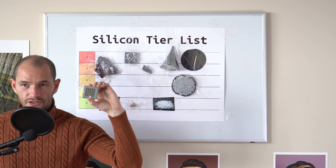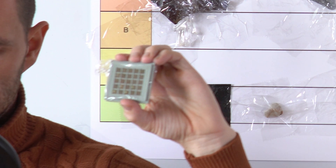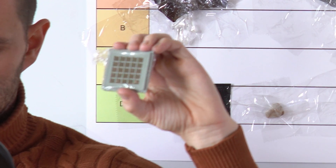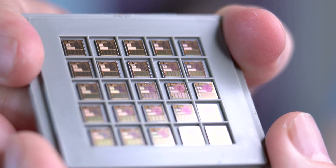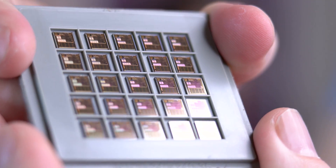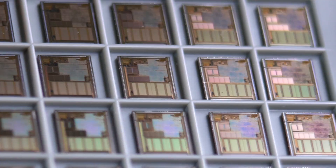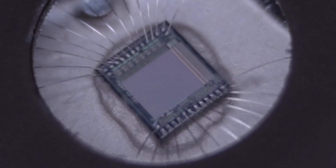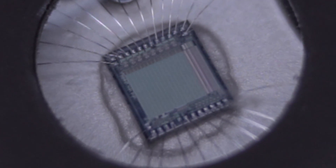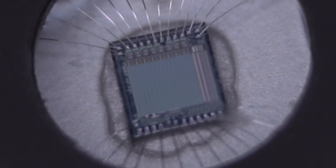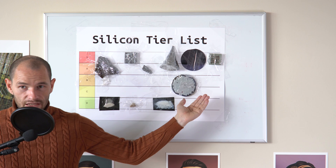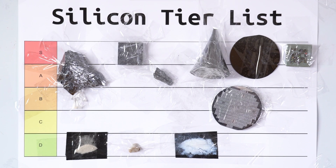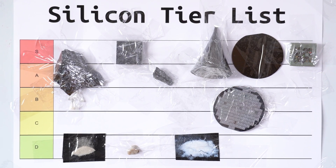And finally, we have diced silicon wafers. This is the step after a finished silicon wafer has been cut up into little squares. At this point, the circuits in these chips are actually capable of running and calculating things. However, since they're not yet attached to the outside world, it's hard to interact with them. The next manufacturing step for these chips is to perform wire bonding and package them into a finished product. These chips are really cool to look at, so I'll put them in the S tier. And there you have it — all of my silicon neatly ranked in a tier list.